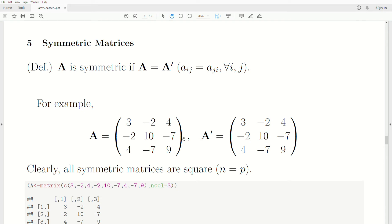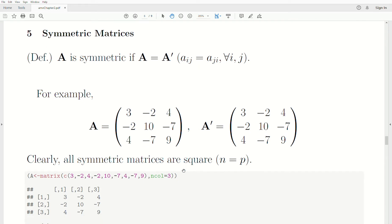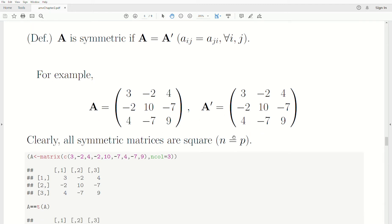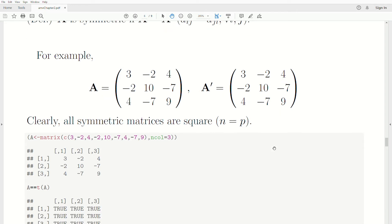You know, if you were to fold this over on top of itself, you would get the same numbers. And so, clearly, symmetric matrices have to be square. N equals P, right? Because if you transpose a non-square matrix, so A is three by two, you transpose, it gets two by three. So there's no way that A and A transpose can be equal.